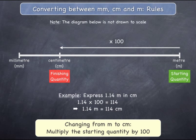Likewise, if you are changing a quantity from metres to centimetres, you must multiply the starting quantity by one hundred to get an equivalent quantity in centimetres, as the example shows.